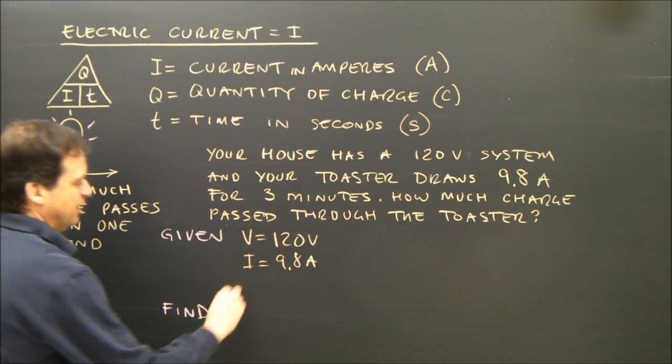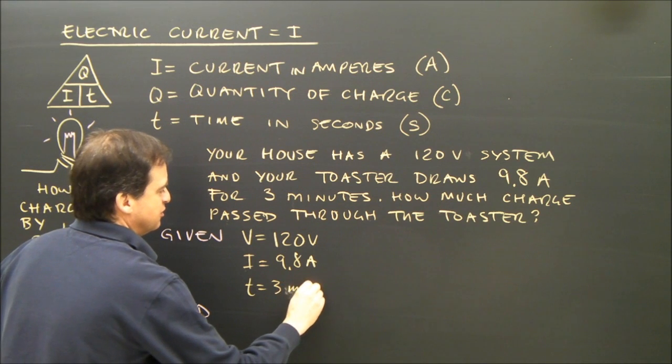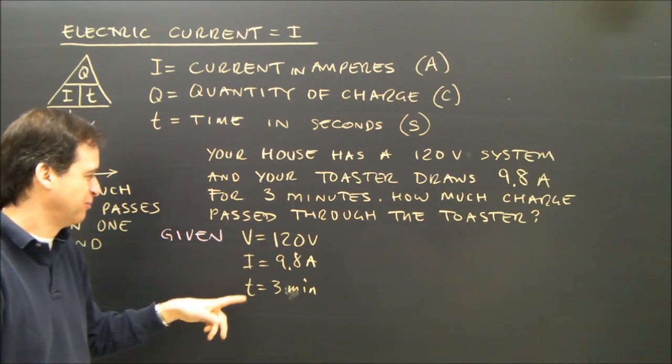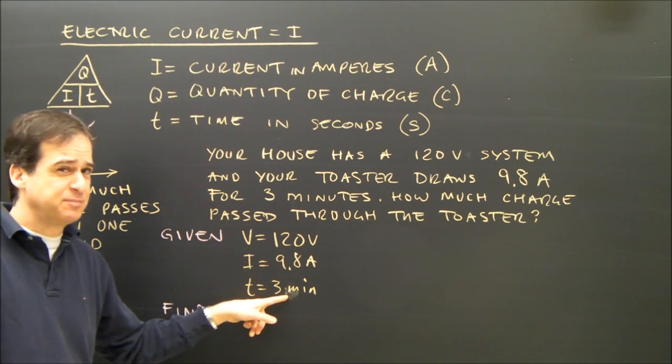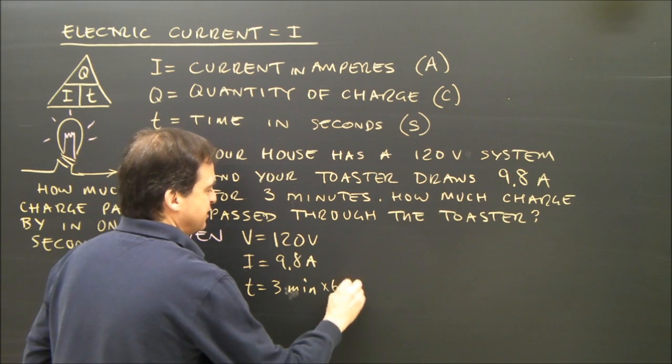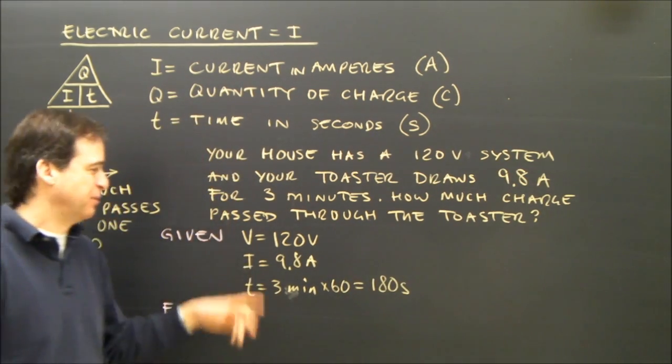And the time is 3 minutes. T equals 3 minutes. I checked my units, because that's a good idea to do it with every kind of problem. And this is supposed to be in seconds. So 3 minutes, I've got to multiply by 60, which gives me 180 seconds. So my units are good.